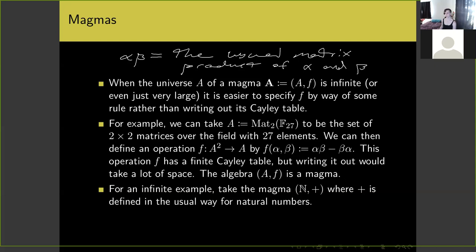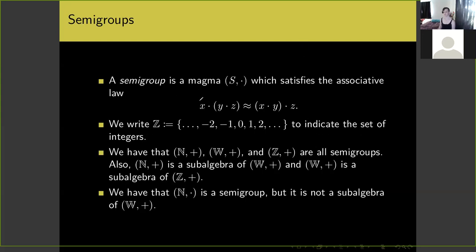If we want an infinite example of a magma, we can take the natural numbers under addition, where addition is defined in the usual way for natural numbers. Of course one could start writing out the beginning of the Cayley table for this magma, but one could never finish because there are infinitely many different natural numbers to add together.